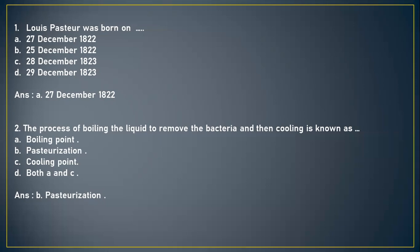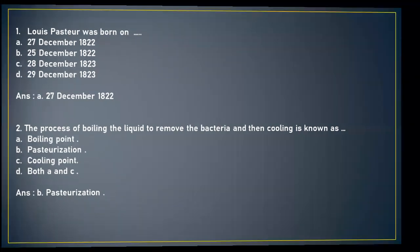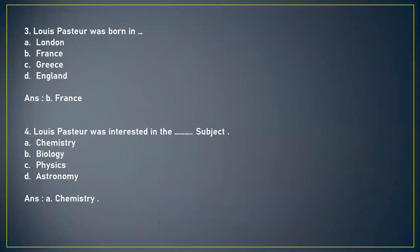Next question: The process of boiling the liquid to remove the bacteria and then cooling is known as — A) boiling point, B) pasteurization, C) cooling point, or D) both A and C. The correct answer is option B, pasteurization. Next: Louis Pasteur was born in — A) London, B) France, C) Greece, or D) England. The answer is option B, France.